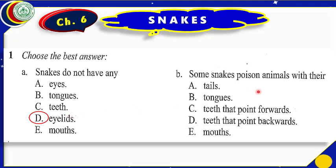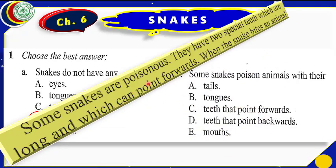Let us move to the next part. 'Some snakes poison animals with their...' — tail, tongue, teeth, or mouth? We have read that a snake can poison another animal with the help of its teeth. There are two types of teeth — teeth that point forward and teeth that point backward. It is written in the lesson: 'Some snakes are poisonous; they have two special teeth which are long and which can point forwards.' When the snake bites, the animal cannot go free. Snakes use these forward-pointing teeth to poison other animals. That is why the correct option is C.